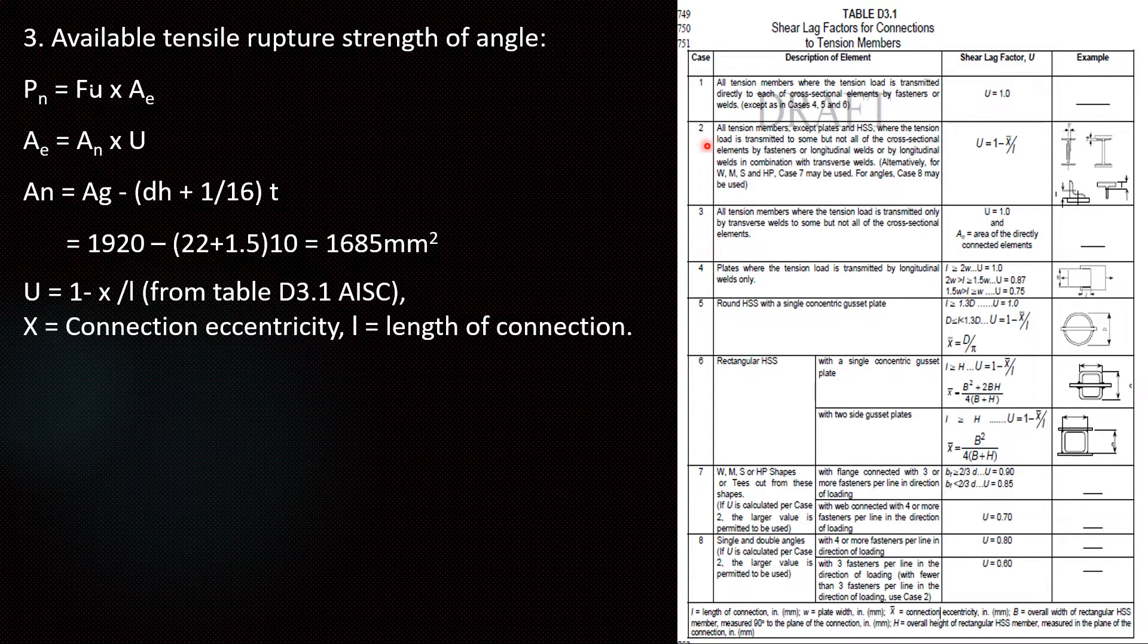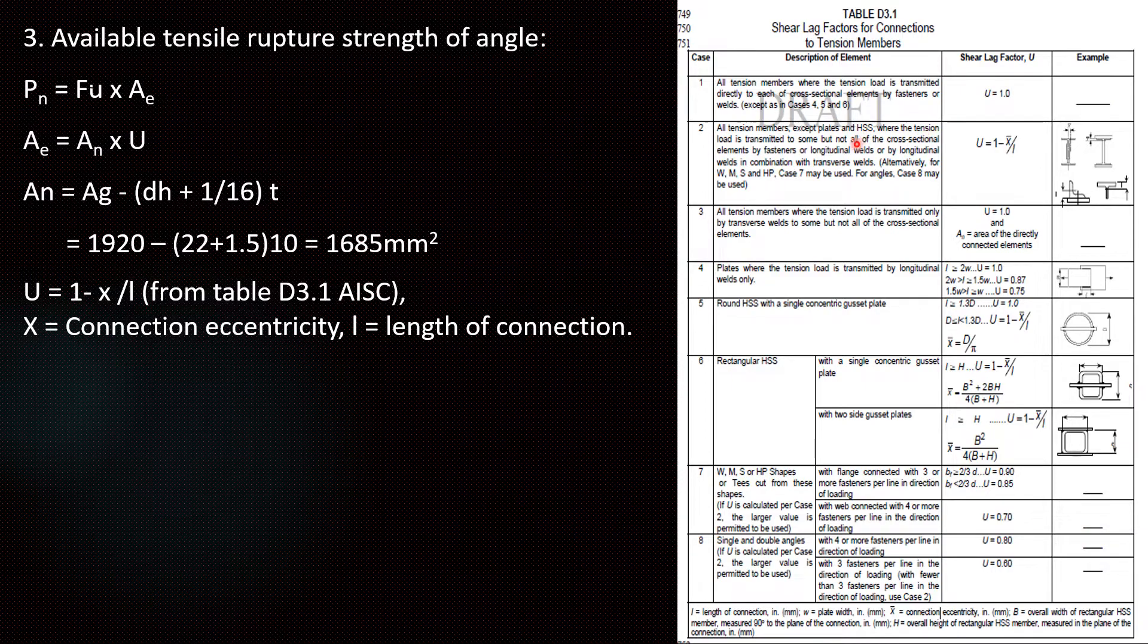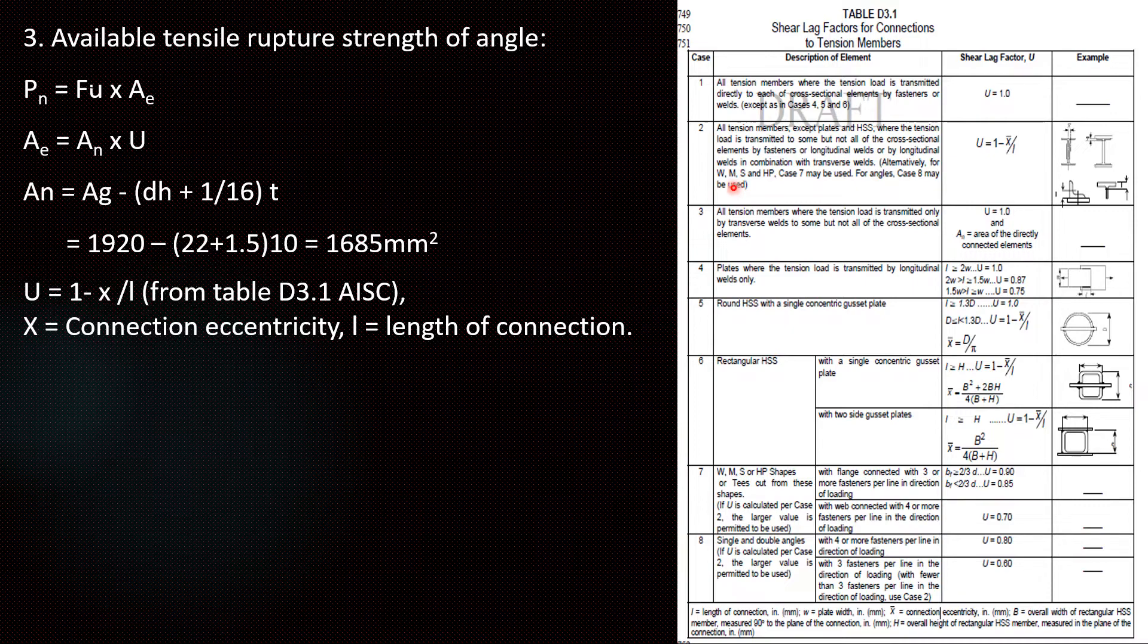We are taking case 2. In case 2, all tension members except plates and HSS where the tension load is transmitted to some but not all of the cross section elements by fasteners or long tension welds. Here we are transmitting the loads through fasteners and this is applicable for all members except plates and HSS.